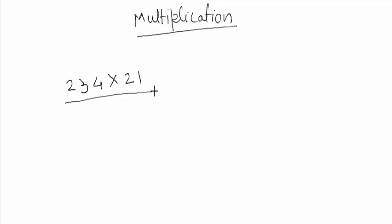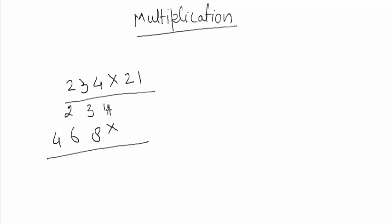So what you do is just multiply 234 by 2: 4×2 is 8, 3×2 is 6, 2×2 is 4. Now multiply by 1: 4×1 is 4. You get 11 for that position, so write 1 and carry 1.